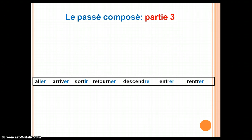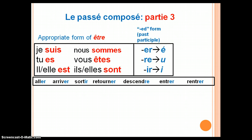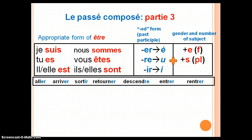Again, to create stage three passé composé, instead of avoir you need the appropriate form of être, followed by the past participle of your verb. These verbs follow er to é, re to u, and ir to i. You must also make your past participle agree in gender and number with the subject, adding an e if it's feminine and/or an s if it's plural.